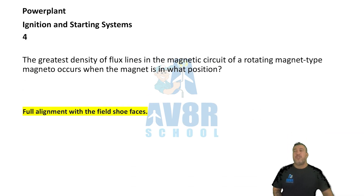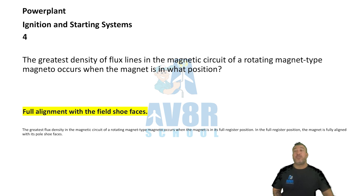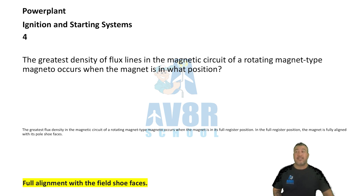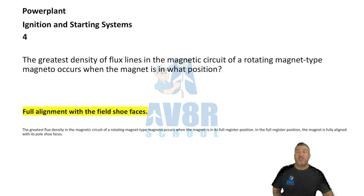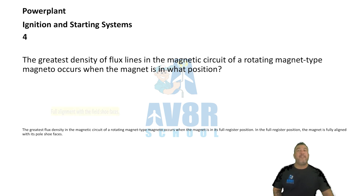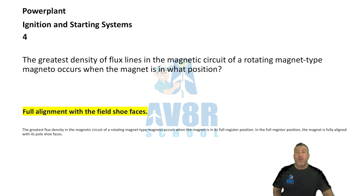Number four: Full alignment with the field shoe faces. The greatest density of flux lines in the magnetic circuit of a rotating magnet type magneto occurs when the magnet is in full alignment with the field shoe faces.